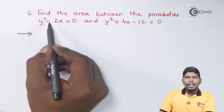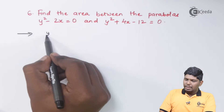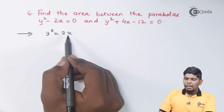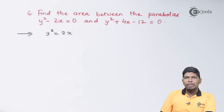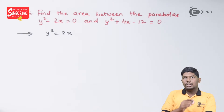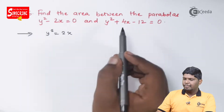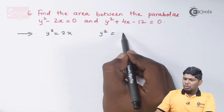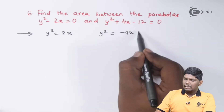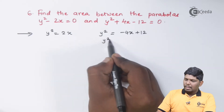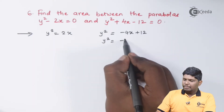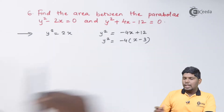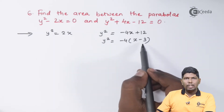Let us try to convert these parabolas into standard form. The first equation gives y squared equals 2x, which opens in the positive x-axis direction. In the second equation, we have y squared equals minus 4x plus 12, and taking minus 4 common we get y squared equals minus 4(x minus 3). This is a shifted parabola.